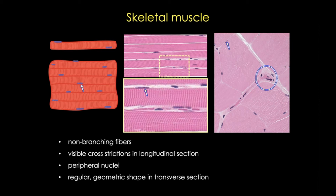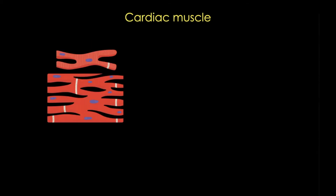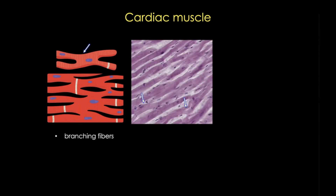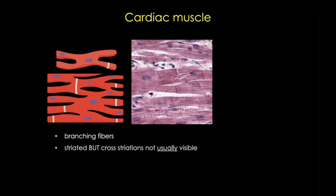In contrast to this very straight, organized skeletal muscle, cardiac muscle has highly branching fibers. Cardiac muscle does contain sarcomeres and it is striated, but usually we can't see those striations under the light microscope, although they're somewhat visible in this particular section. But what I really want to focus on here are the most identifiable characteristics of cardiac muscle: the intercalated discs.